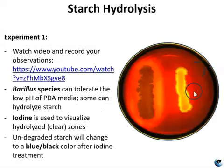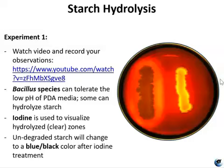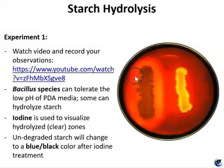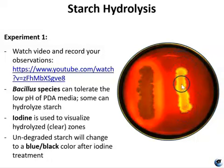For experiment one, you're going to watch a video in which two species of Bacillus bacteria are tested for starch hydrolysis. Bacillus are acetophilic and endospore-forming bacteria, so they can tolerate the low pH of PDA media, and some can also hydrolyze starch, which is abundant in PDA. Potato Dextrose Agar has a lot of starch in it. Iodine is used to visualize the hydrolyzed clear zones because iodine reacts with starch and changes to a bluish-black color. The lighter zone of hydrolysis indicates a species positive for starch hydrolysis, while the dark color around another species means it is negative for hydrolysis.